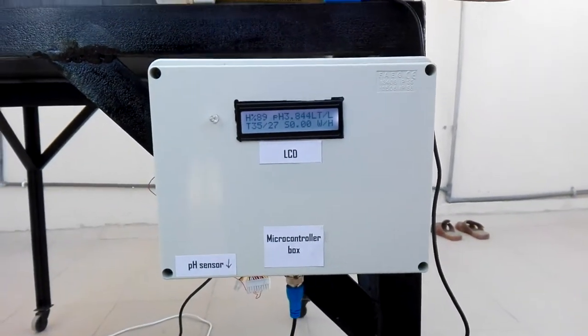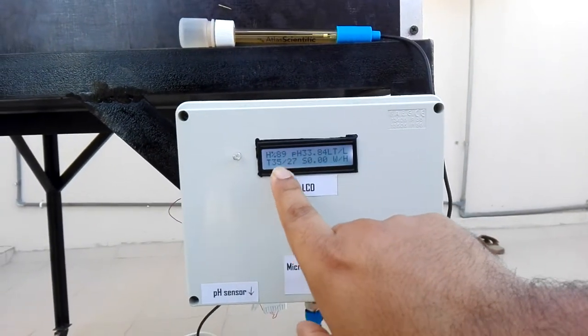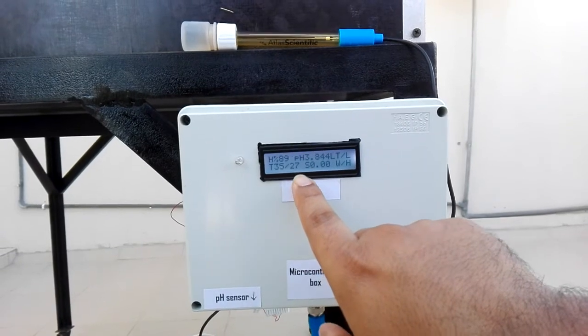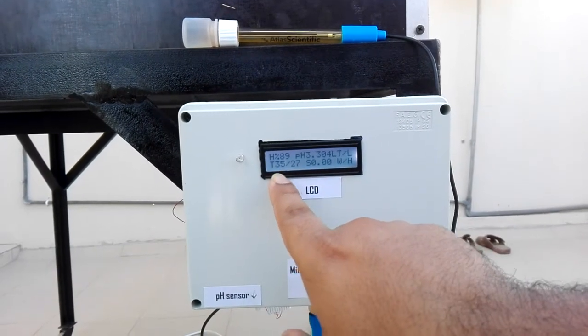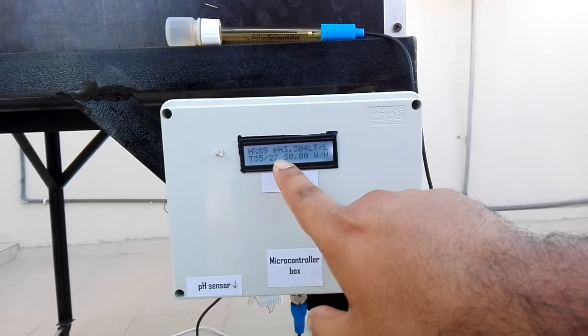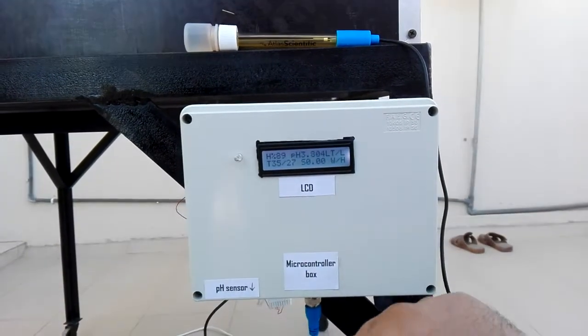Then we have a water level here which shows that at the moment the water level is low in the tank. Here we have two kinds of temperature - one is inside and one is outside. Inside temperature at the moment is 35 degrees Celsius and this is 27 degrees Celsius outside temperature.